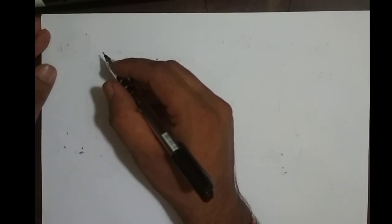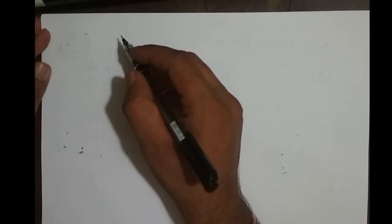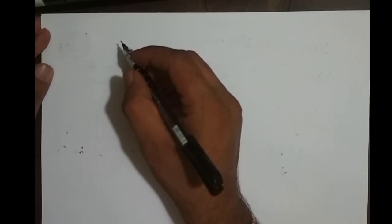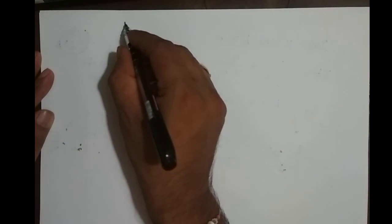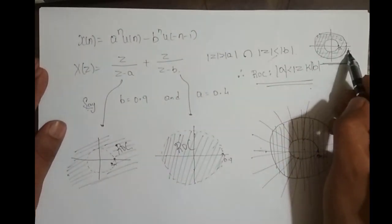To recall: ROC of a finite length right-sided sequence is the entire Z-plane except at Z equal to 0. ROC of a finite length left-sided sequence is entire Z-plane except at Z equal to infinity. ROC of a finite length double-sided sequence is entire Z-plane except at Z equal to 0 and infinity. ROC of an infinite length right-sided sequence is outside the circle with radius A. ROC of an infinite length left-sided sequence is inside the circle with radius B. ROC of an infinite length double-sided sequence is a ring shape in the Z-plane, in between A and B, where A is for the right-sided and B is for the left-sided sequence.